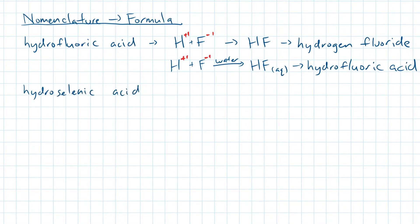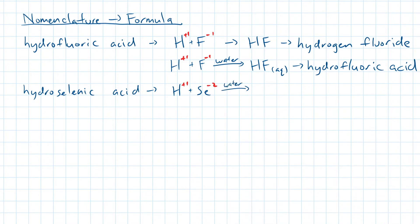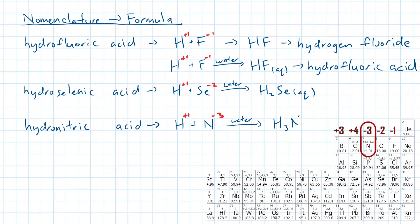Next example: all acids contain hydrogen as its cation, and selenic must be for the element selenium. Selenium has a charge of minus two. When we cross over the charges, we end up with H2Se(aq). How about you try out the third example on your own? Nitrogen has a charge of minus three, so after the crossover we end up with H3N(aq).